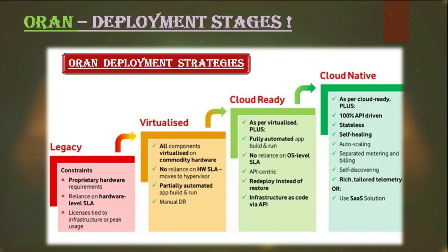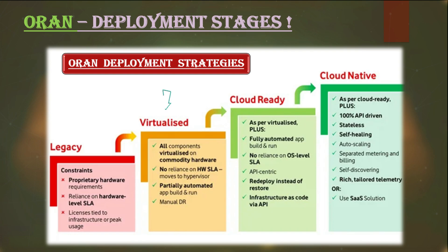Stage 2 moves more towards the virtualization of the RAN ecosystem. The native RAN network can be virtualized — note that this does not mean it is an open RAN system. Here the concept of virtual machines is introduced, where software and functions can be deployed based on requirements. This stage includes virtualization of legacy hardware and a hypervisor-driven architecture. At this stage, automations are very limited and most configurations are manual.